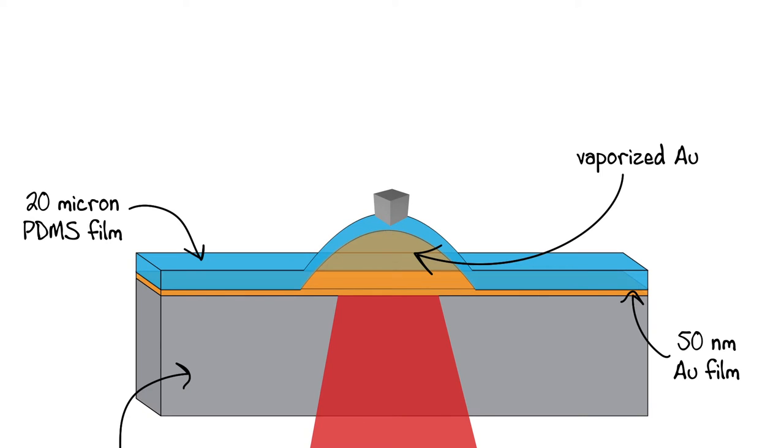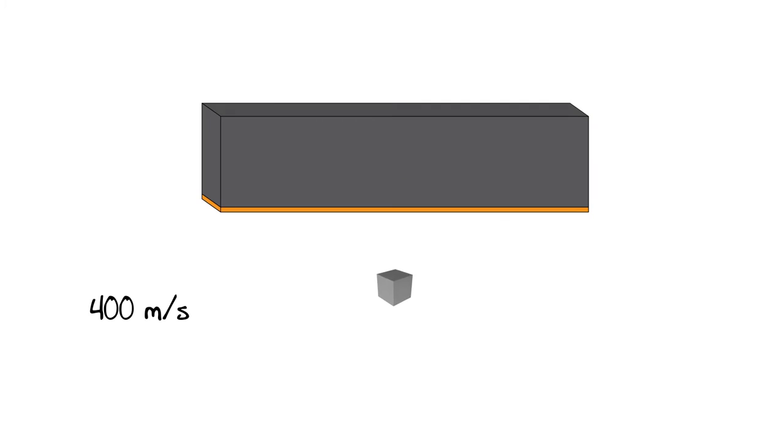The projectile, a silver microcube in this case, was drop-casted on top of the polymer and fired at a supersonic velocity of 400 meters per second directly at a rigid impenetrable target.